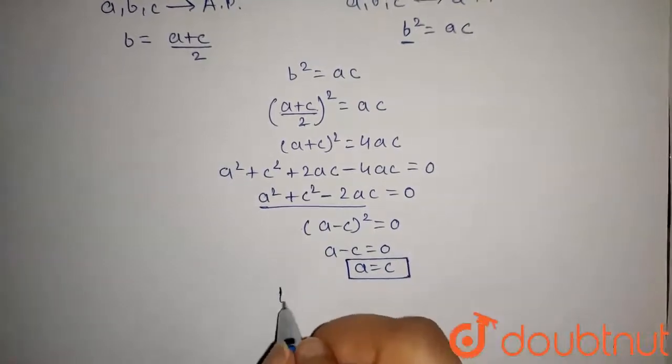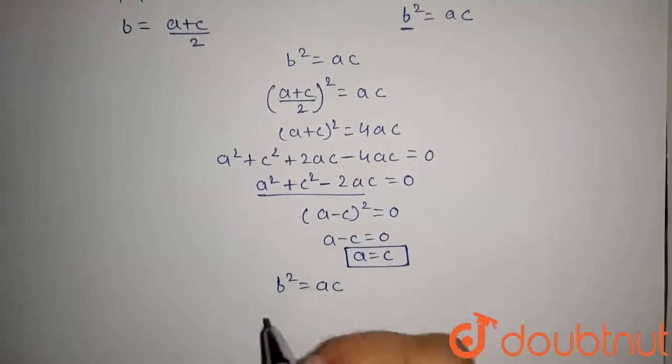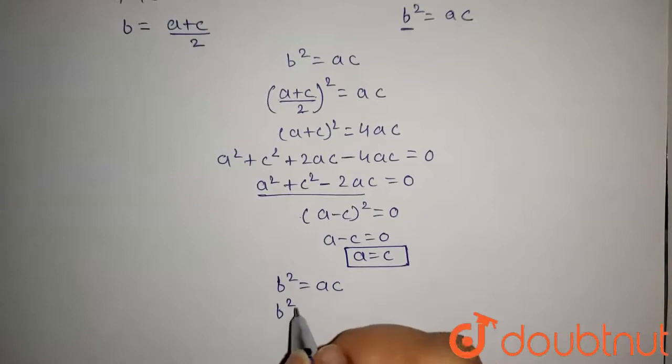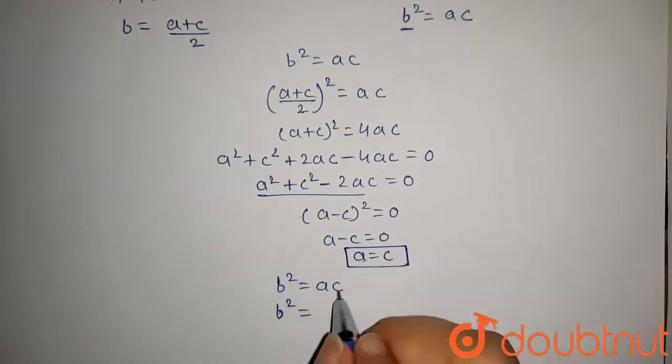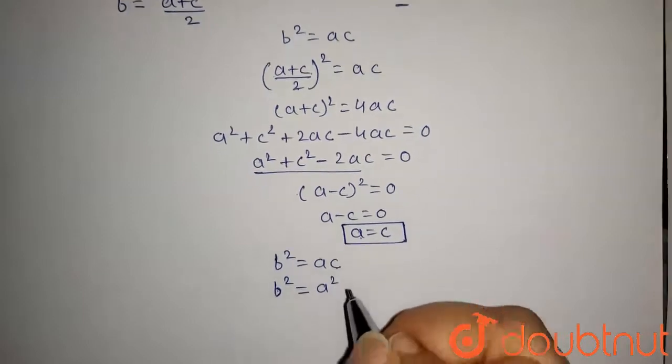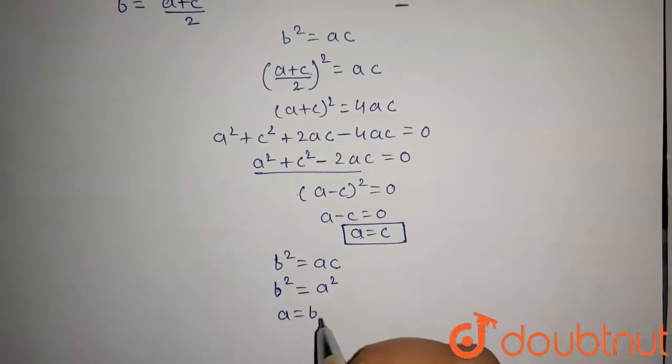We have the equation B square equals AC, as A, B, C are in GP also. So putting it here, we get B square equals A times C. Since A equals C, we can write this as A square. From this we get A equals B.